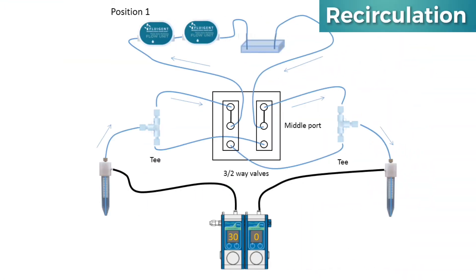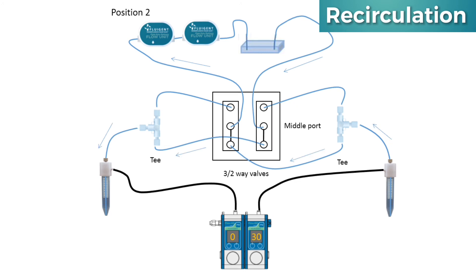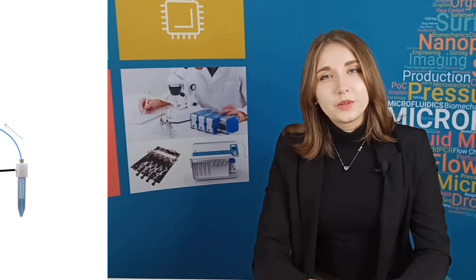Recirculation: using two T-connectors and two T-switches, it is possible to flow alternatively from reservoir A to B and B to A, while circulating through the chip in the same direction. This is very useful for long cell culture experiments. With Fluigent tools and software, programming fluid sequences is as easy as a children's game. See you in the next videos.